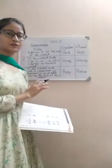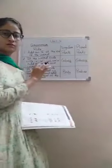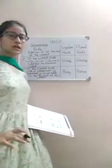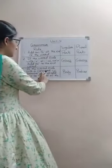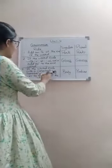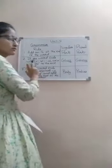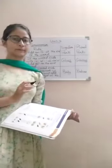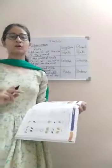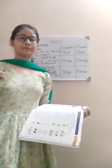I hope you all got it. Now let us move to the third rule. The third rule is: if the word ends with a consonant and Y, remove Y and add IES to the end of the word. When the word ends with a consonant followed by Y, we have to remove the Y.